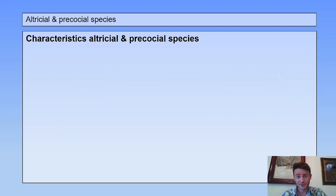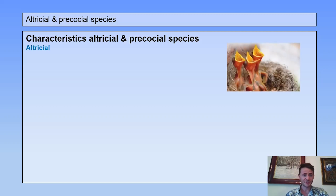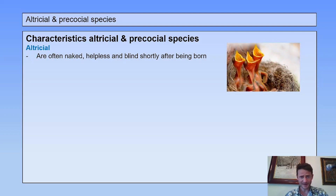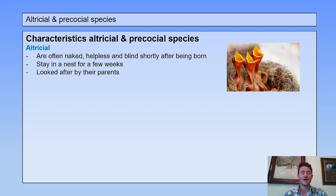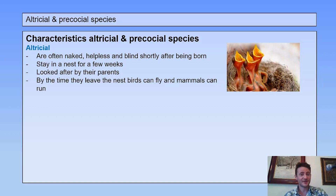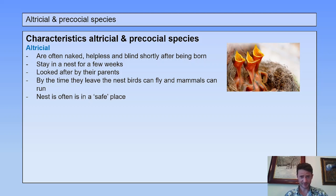The characteristics of altricial and precocial species: altricial animals or species are often naked, helpless, and blind shortly after being born. They stay in a nest for a few weeks, looked after by their parents, and by the time they leave the nest, birds can fly and mammals can run. The nest is often in a safe place.